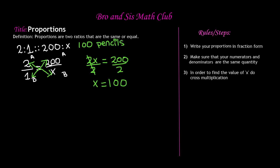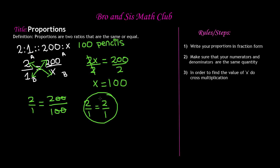If we want to make sure our answer is correct, we replace X with 100: 2 over 1 equals 200 over 100. Simplifying 200 over 100, the zeros cancel and we're left with 2 over 1 equals 2 over 1. These are equal, so our answer is correct. That was a very simple example — now let's move on to a word problem.